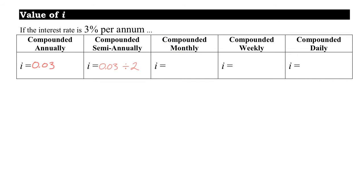If you're compounding monthly, that means 12 times per year, so you divide the interest rate by 12. Compounded weekly — there are 52 weeks in a year — so divide by 52. If compounded daily, divide by 365, because that's how many times each year the interest is being calculated. To summarize: annually keep the rate as-is; twice per year divide by 2; monthly divide by 12; weekly by 52; daily by 365.